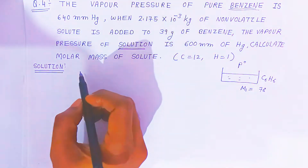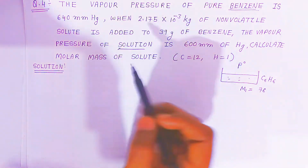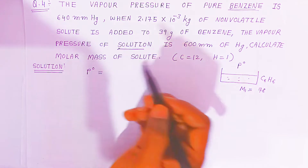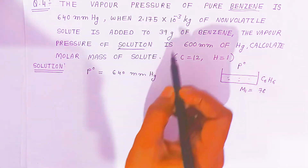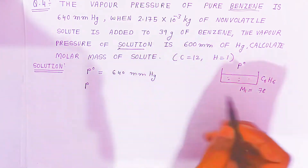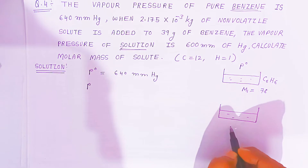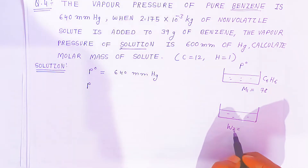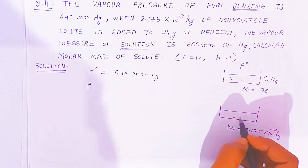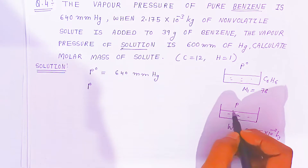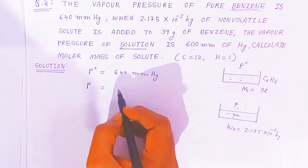Now, with this data we are going to use the formula. Both the vapor pressure of pure benzene and the vapor pressure of the solution are given. P₀ — vapor pressure of pure solvent (benzene) — is 640 mm mercury. The vapor pressure of solution, written as P, is 600 mm mercury. The solution is made by adding benzene plus W₂ (weight of solute), which is 2.175 × 10⁻³ kg.